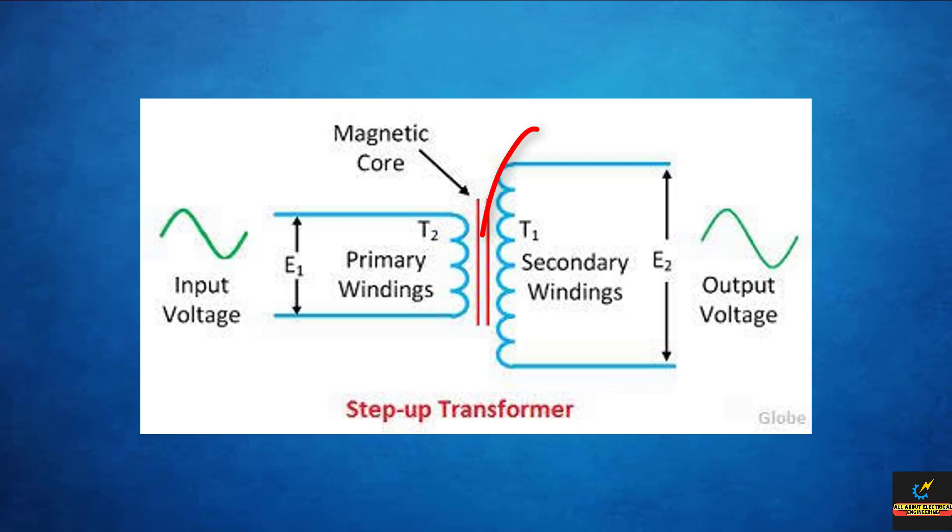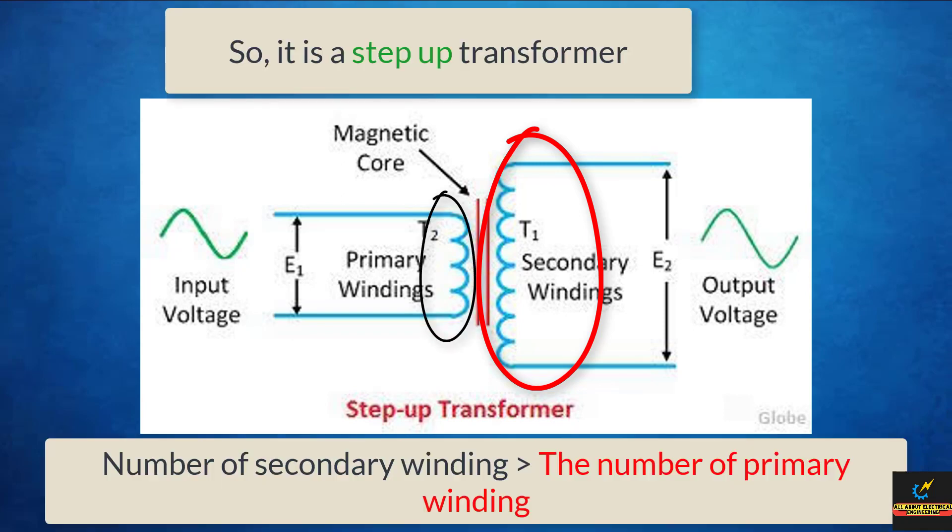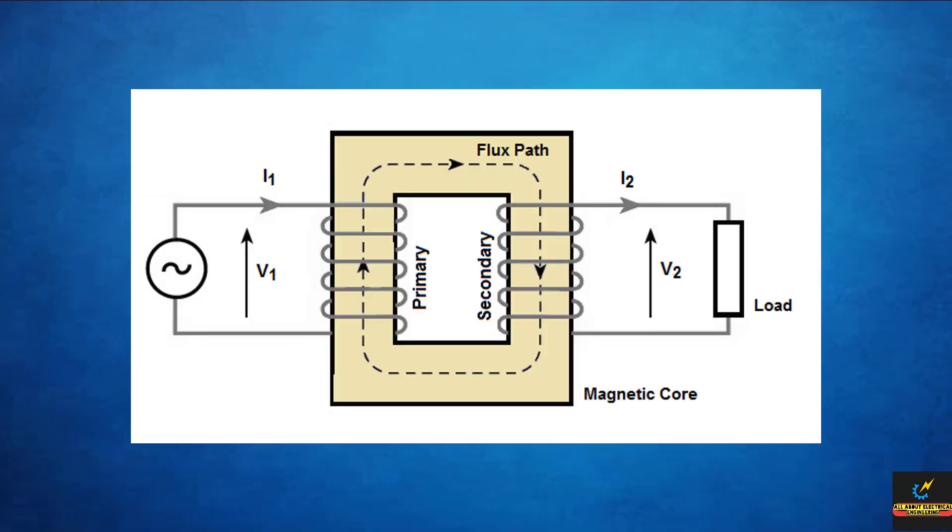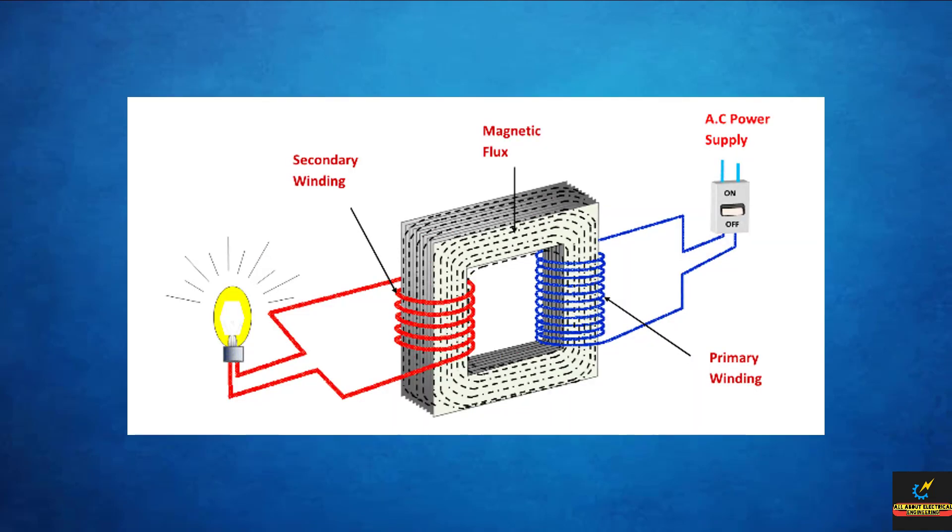So it means if the number of turns in secondary is greater than primary, then the voltage induced is greater than the applied input voltage. Now if load is connected across the secondary winding of the transformer, the secondary EMF E2 will cause a current I2 to flow through the load. Thus a transformer is able to transfer AC power from one circuit to another with a change in voltage level.